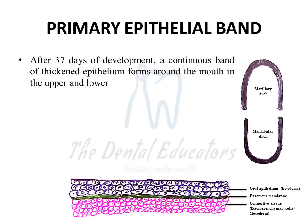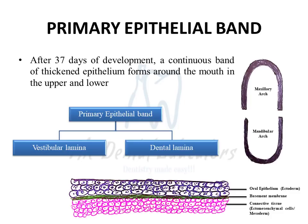The primary epithelial band corresponds to the maxillary or the mandibular arch and is composed of three different layers. The first is the oral epithelium, which is ectodermal in origin. Just below the oral epithelium is the basement membrane, which is a separating layer between the oral epithelium and the connective tissue. The connective tissue cells can be referred to as mesodermal or ectodermal cells.